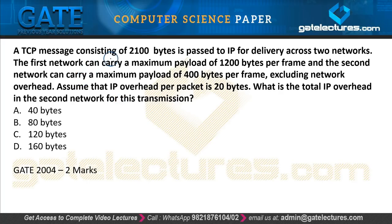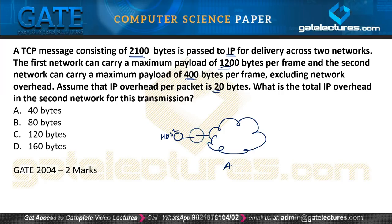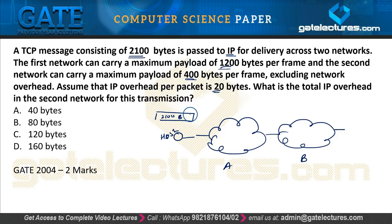A TCP message of 2100 bytes is passed to IP for delivery across two networks. The first network can carry a maximum payload of 1200 bytes per frame and the second network can carry a maximum payload of 400 bytes per frame. Excluding network overhead, assuming IP overhead per packet is 20 bytes, what is the total IP overhead in the second network for this transmission?